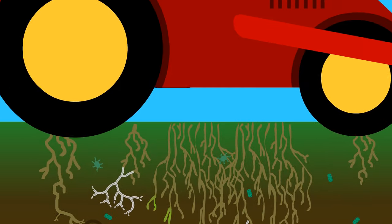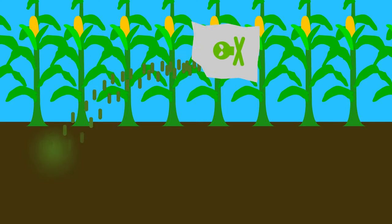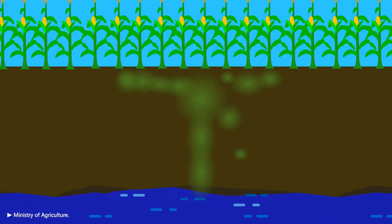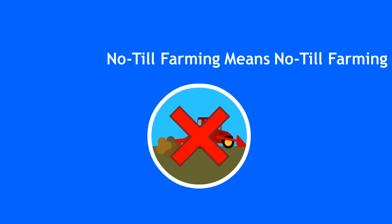Once soil is turned over by a machine, most of these organisms are killed, so the crops must rely on chemical fertilizer, which ends up leaching into the water. Central to no-till farming is to not do that.